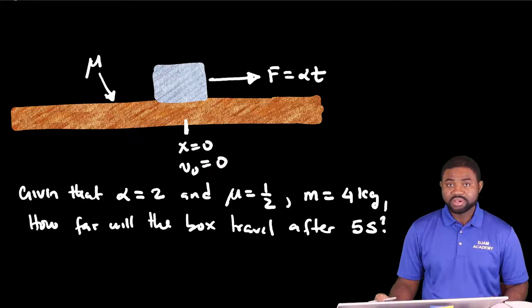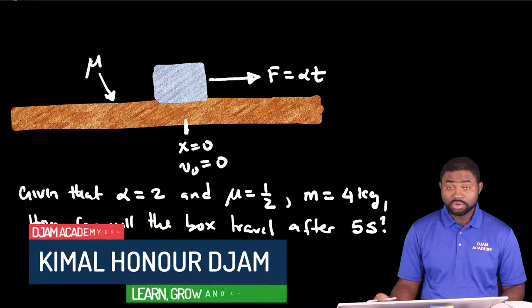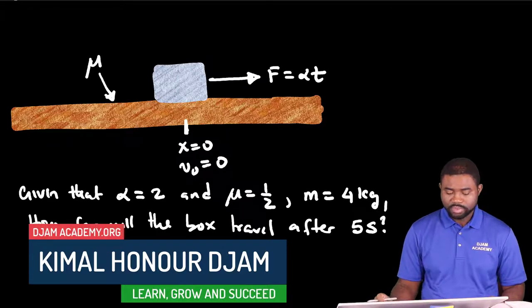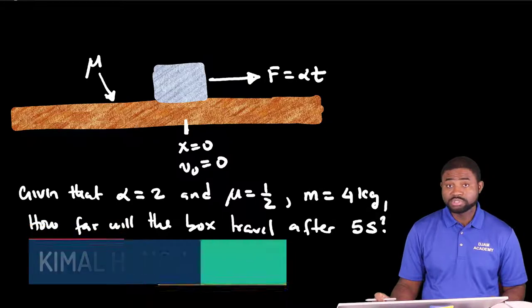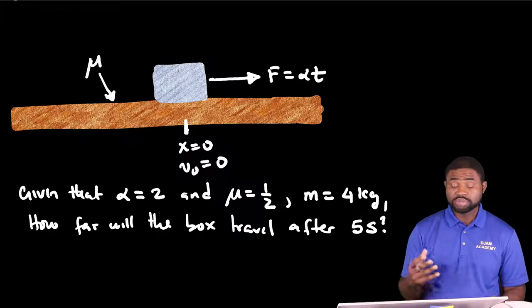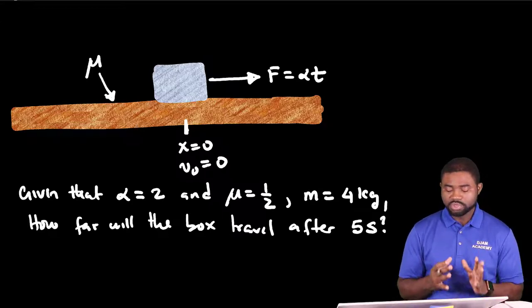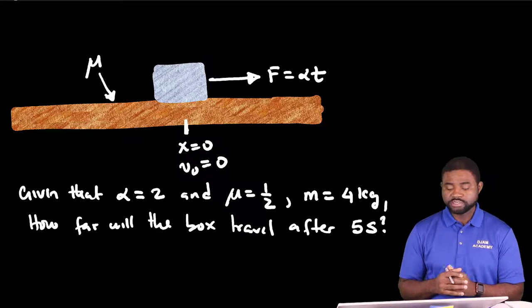Hello everyone and welcome to JAMAcademy. In this example, we have a block of mass M being pulled to the right by a force that is given by alpha multiplied by T. In other words, the force is a function of time. We are asked to calculate how far will the box travel after 5 seconds.